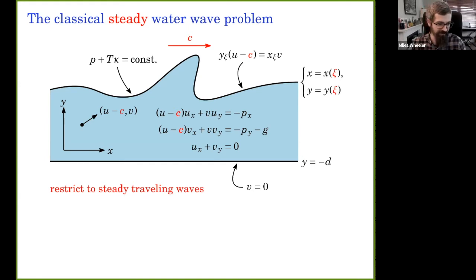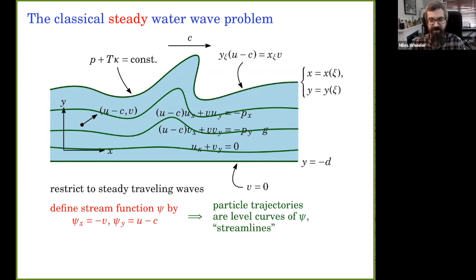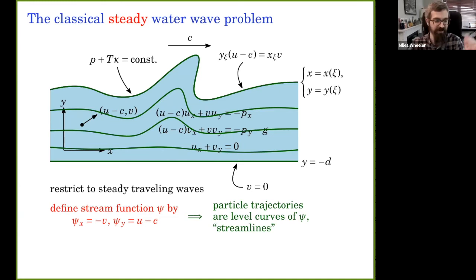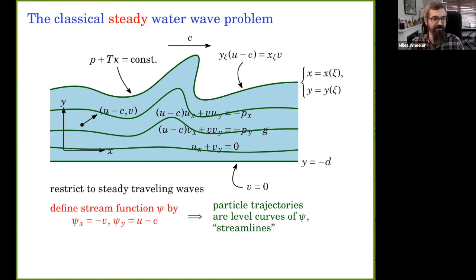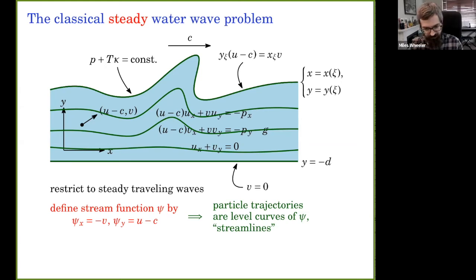I want to introduce the stream function. Since we have an incompressible vector field in 2D, there's a scalar function ψ whose gradient is a rotated version of our velocity field. The great thing about ψ is that its level curves give us the trajectories of fluid particles — if you're on a level curve of ψ you stay on it forever. In fact you can think of ψ as actually the Hamiltonian for the fluid particle motion.